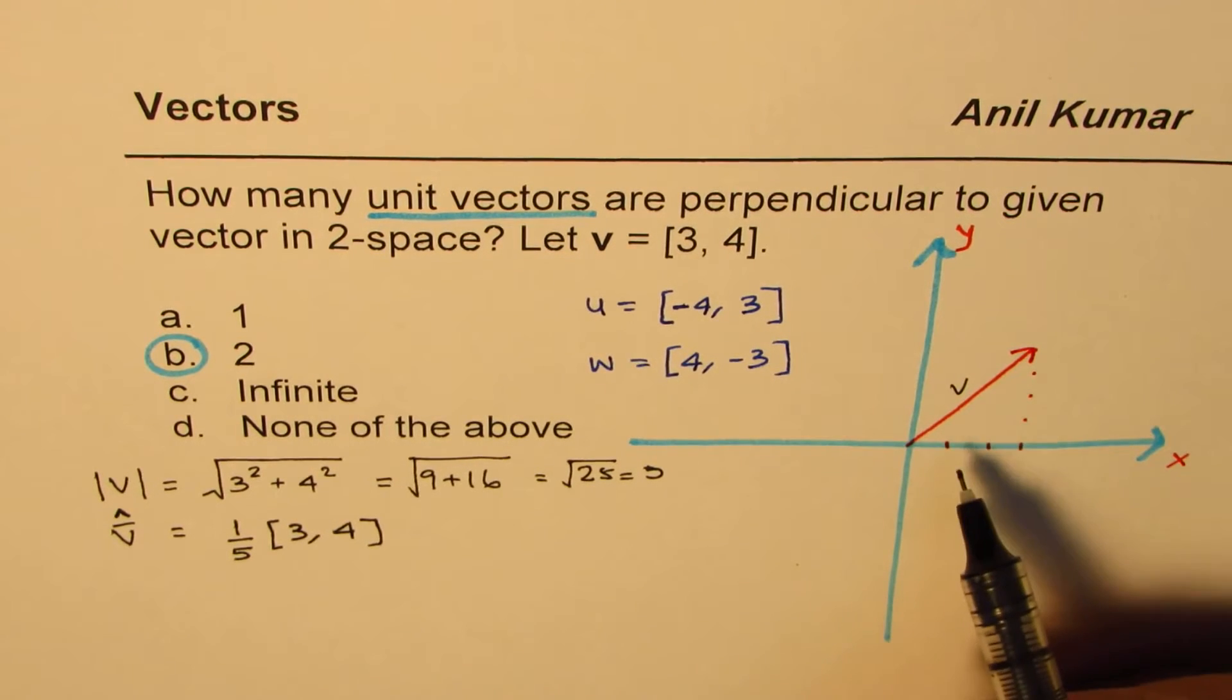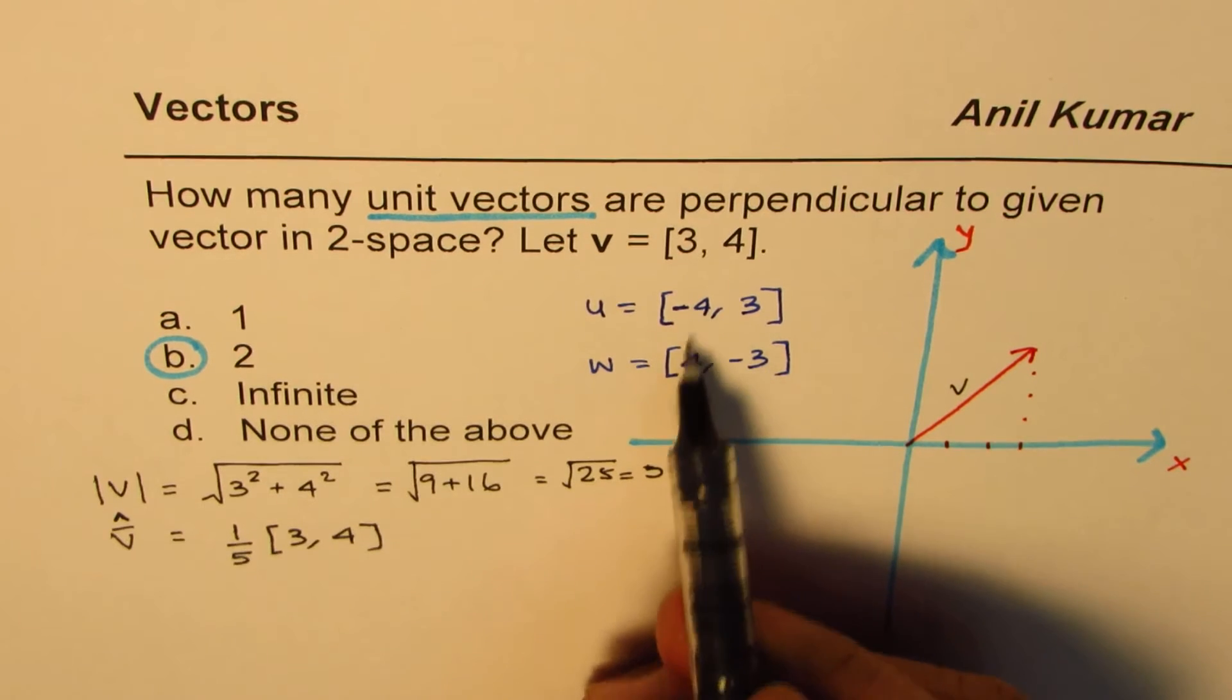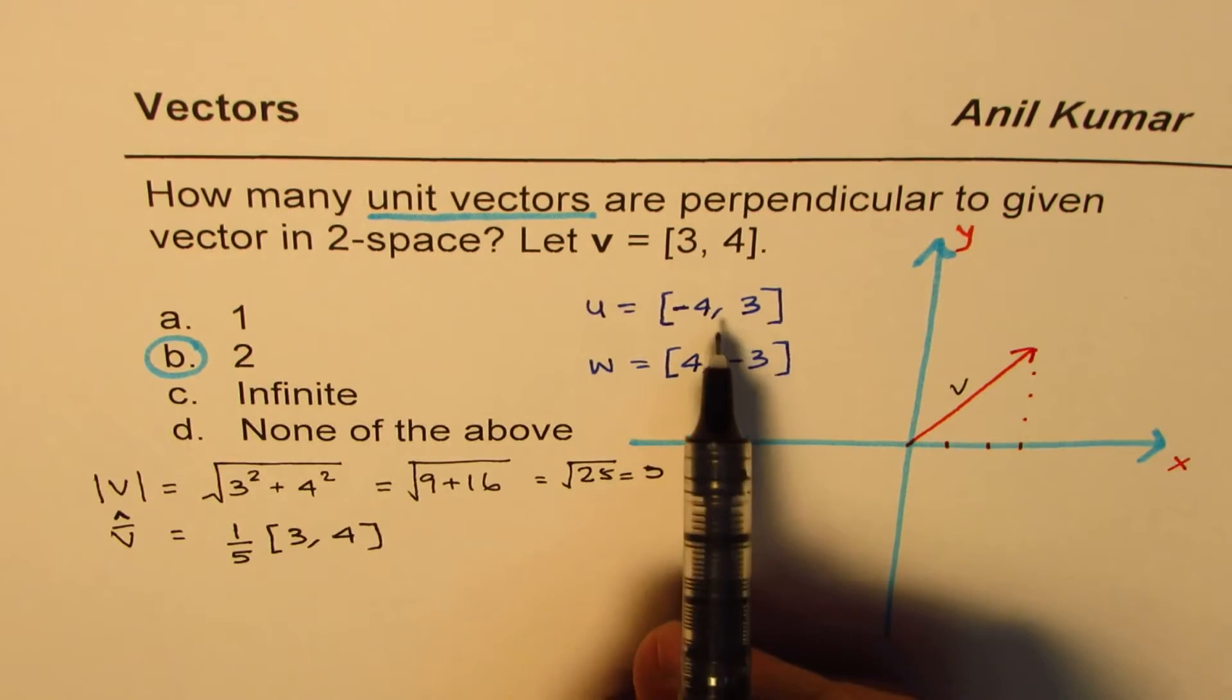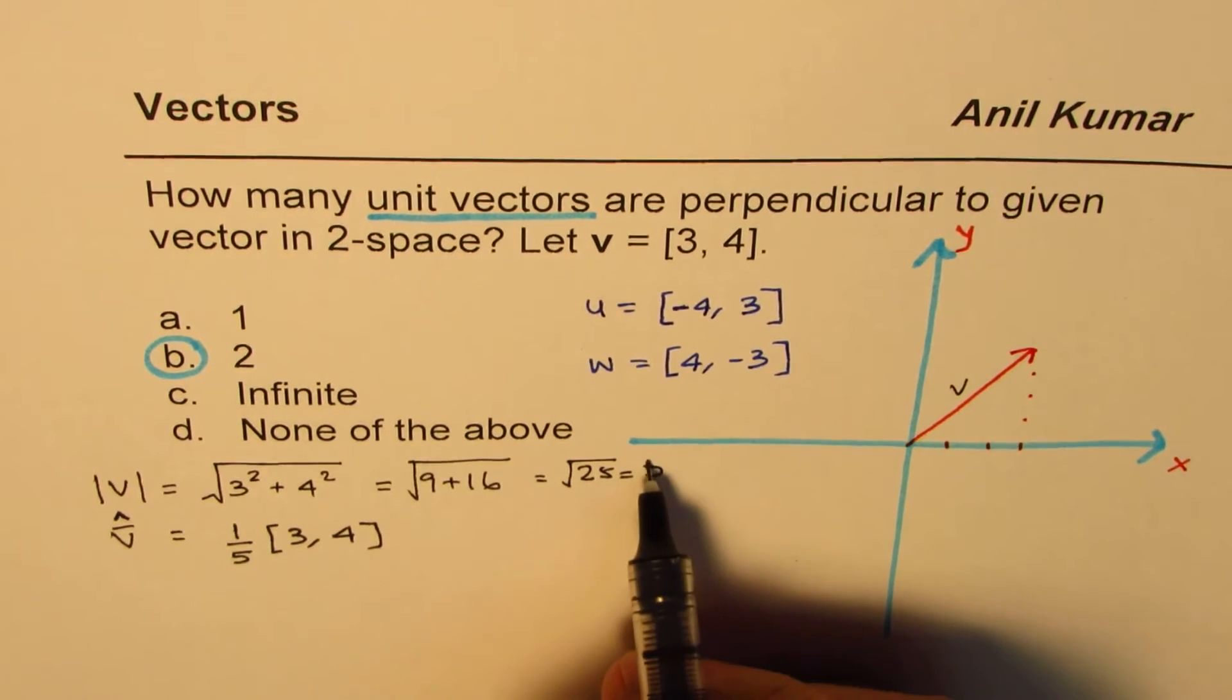The vectors which we are talking about, they are also not unit vectors. They have the same magnitude of 5.